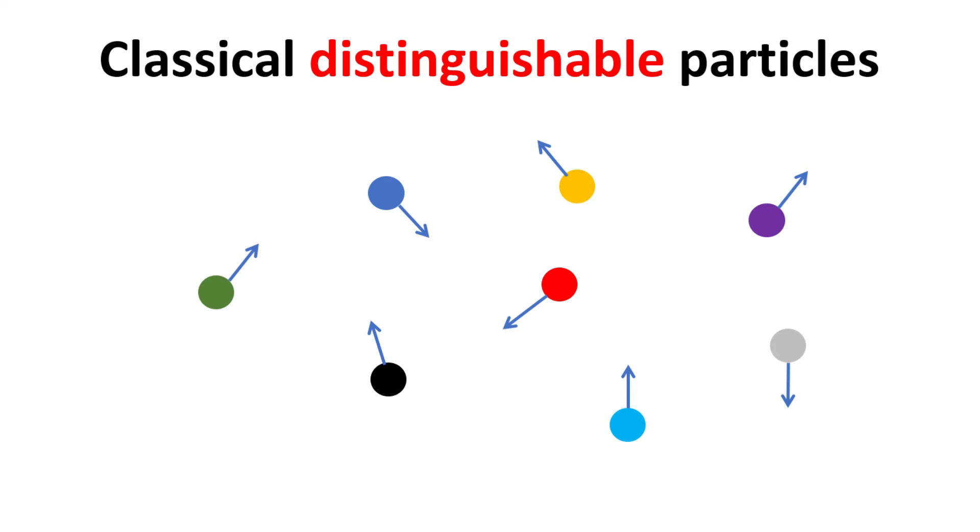Here, particles, although physically identical, are treated as distinguishable because their position and velocity are assumed to be traceable. This means their trajectory over time is deterministic, thus allowing us to effectively label each particle, like how I do it here with the different colors.